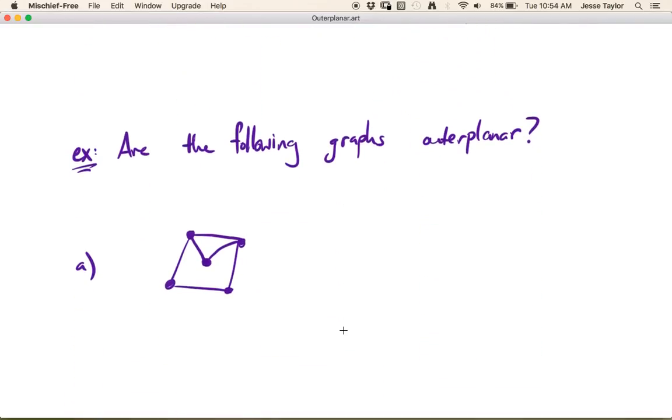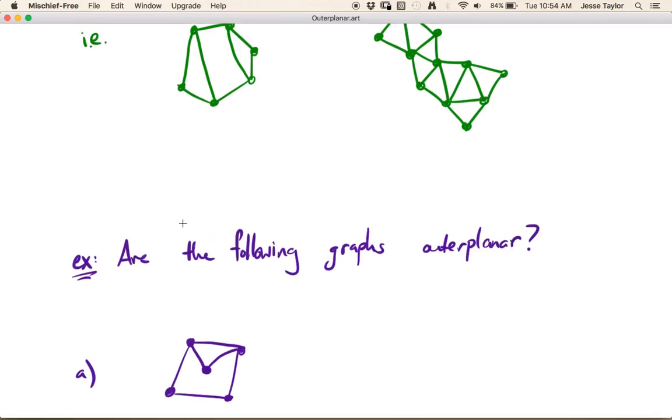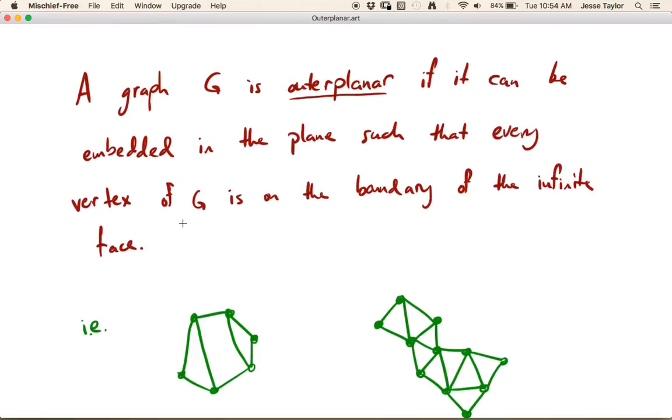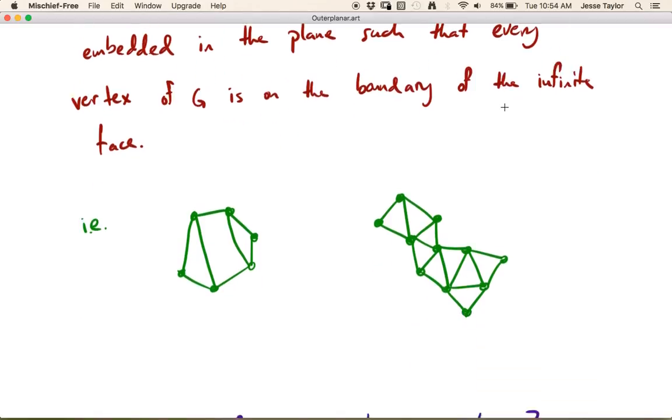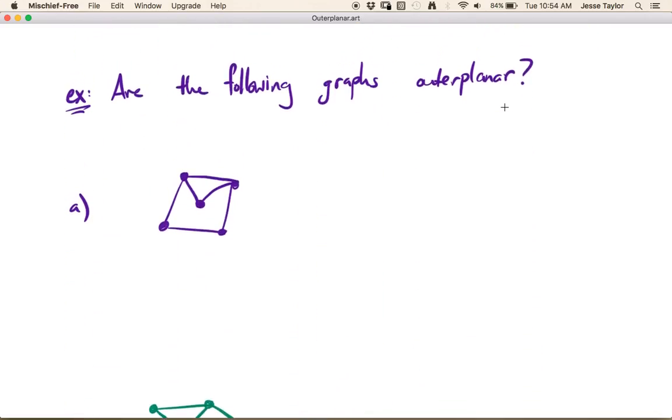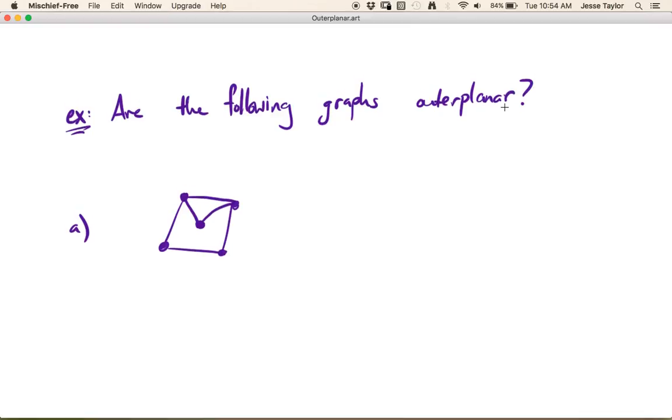Are the following graphs outer planar? Let's just start with this one. So obviously this is not an outer planar embedding, because this vertex on the inside doesn't touch the infinite face. An operative word up here is can. It can be embedded, not that it is. So you might want to think about whether or not this can be embedded in such a way such that every vertex is on the infinite face.